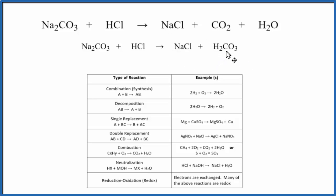So this is actually a double displacement reaction. You can see that the Na comes in and trades places with the hydrogen. So now instead of HCl, we have NaCl, and instead of Na2CO3, we have H2CO3. So that is a double displacement reaction. That's the first one.